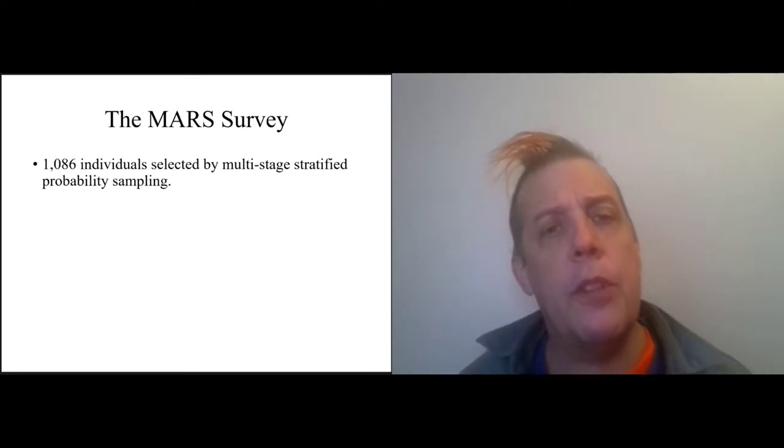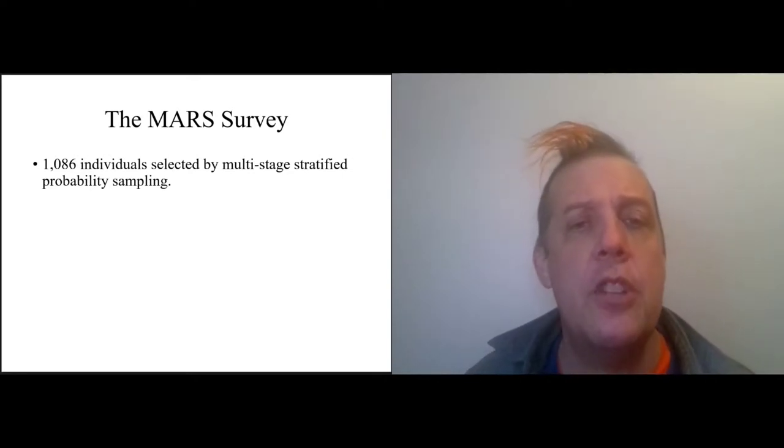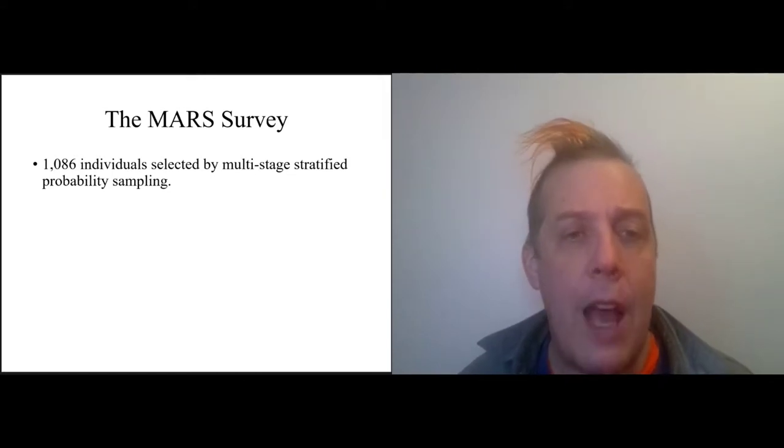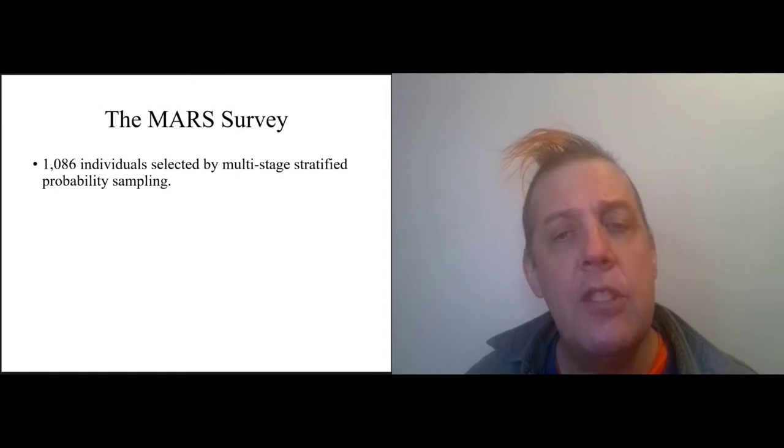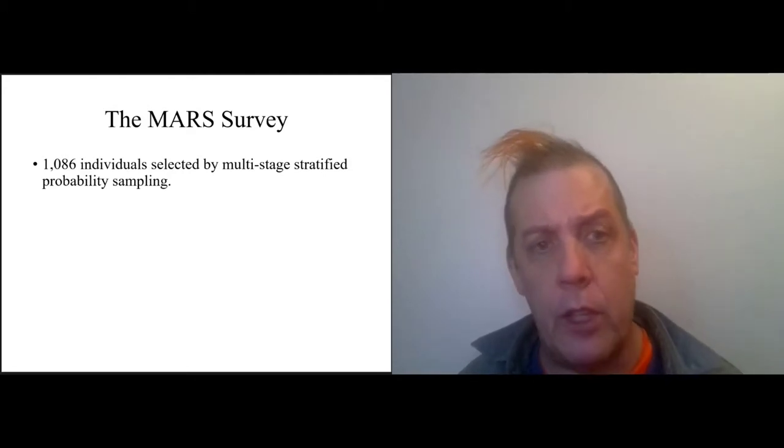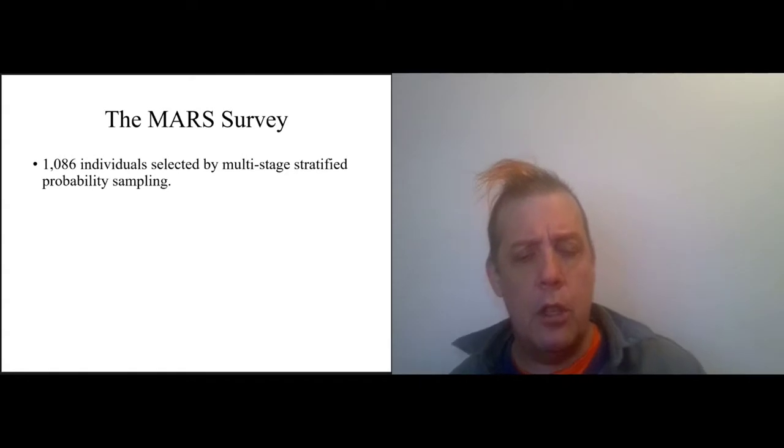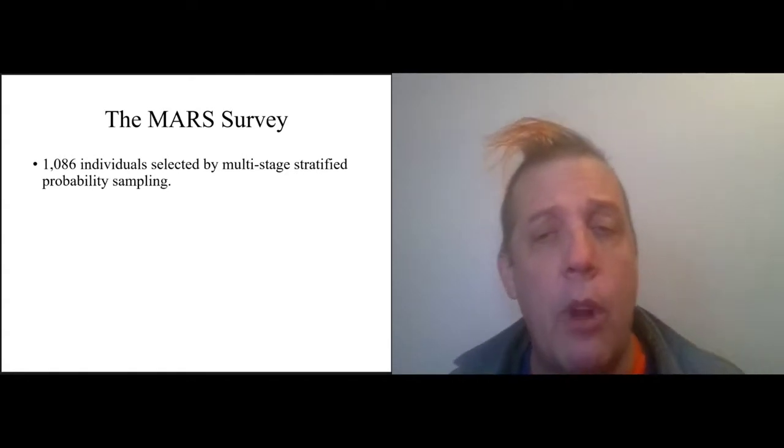It's based on 1,086 individuals surveyed in Milwaukee who are renters, and those individuals were picked by what he calls multi-stage stratified probability sampling. So we already looked at the MARS survey a little bit when we were talking about Desmond and Schulenberger, who identified that there were more evictions out there than people really understood.